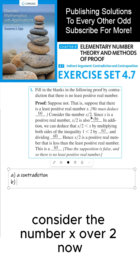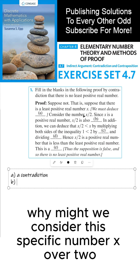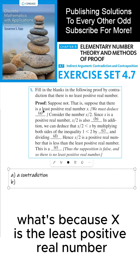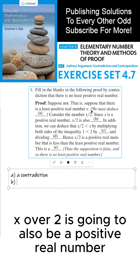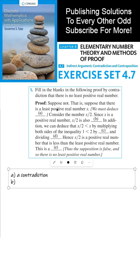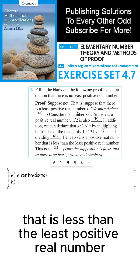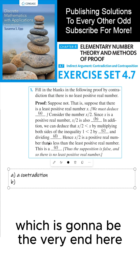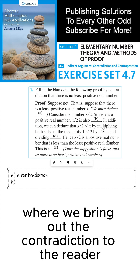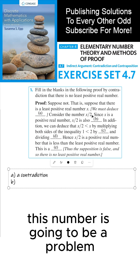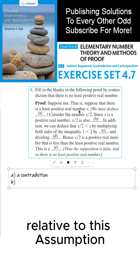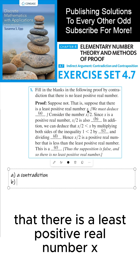Consider the number X over 2. Why might we consider this specific number? Well, it's because X is the least positive real number. X over 2 is also going to be a positive real number that is less than the least positive real number, which is going to bring out the contradiction to the reader. That's why we're considering this number — it's going to be a problem relative to the assumption that there is a least positive real number X.